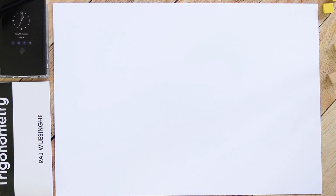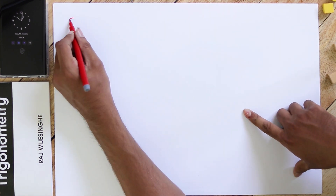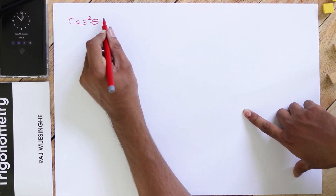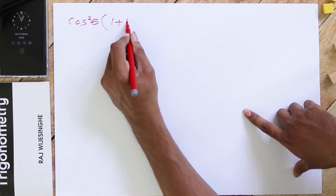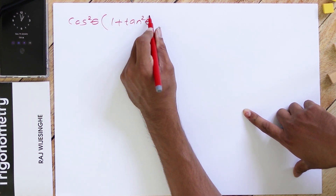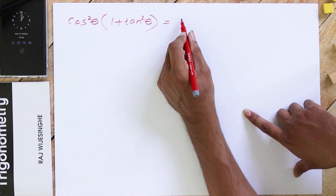Let's look into two example questions regarding trigonometric identities. The first question will be a very simple one — I am doing it to convey the basic concept of proving trigonometric identities. The second question will be a bit complex, where you need to use your creativity. The first question is: cos²θ × (1 + tan²θ) = 1.